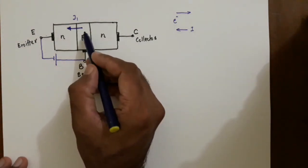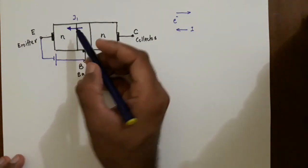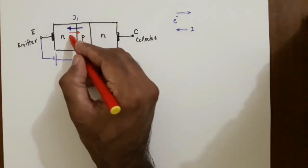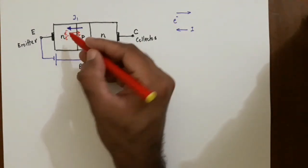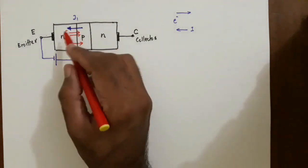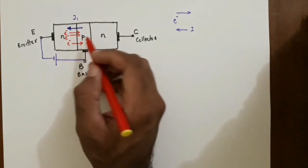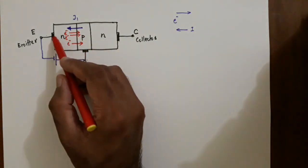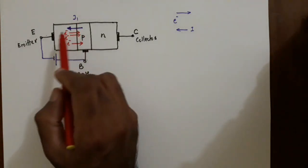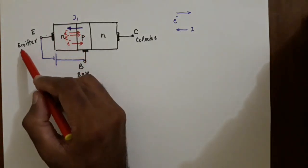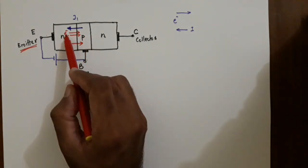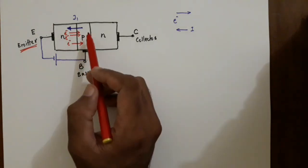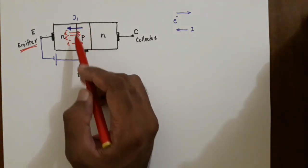Electrons are crossing junction J1 in the left-to-right direction. In other words, electrons are emitted from this side — that is why the name 'emitter.' The electrons are emitted from this region and they cross junction J1.